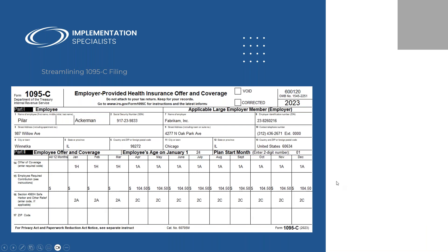Here's a picture of a 1095-C form from demo data in GP. It includes employee information and employer information. The key section is lines 14, 15, and 16. Line 14 is the offer of coverage — what insurance was offered to the employee. These are codes covered in the instructions going from 1A all the way to 1U. Common ones are 1A, which is minimum essential coverage offered, and 1H, which is no offer of coverage.